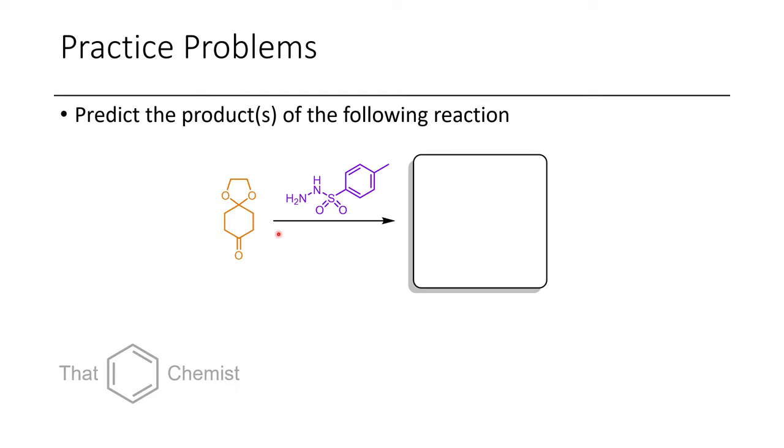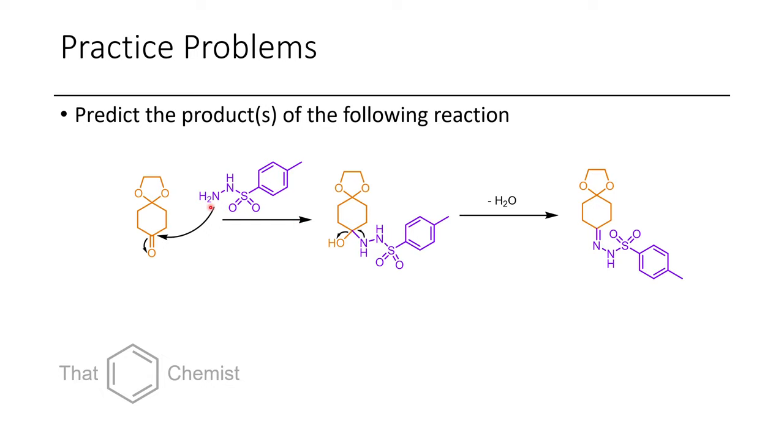First, we have this ketone, and we treat it with tosylhydrazine. Initially, the NH2 of the tosylhydrazine attacks at the ketone. This then allows the electrons on the ketone to swing up on the oxygen, and via proton transfer we form this hydroxy group. Via the elimination of this hydroxy group as water via a subsequent proton transfer, and the electron density of this nitrogen onto this carbon forms this N double bond C, which is a tosylhydrazone, because we have a tosyl group connected to this nitrogen.